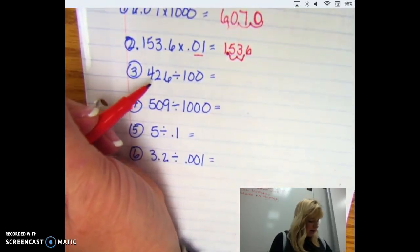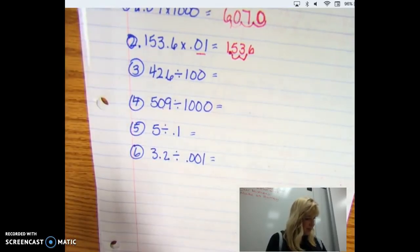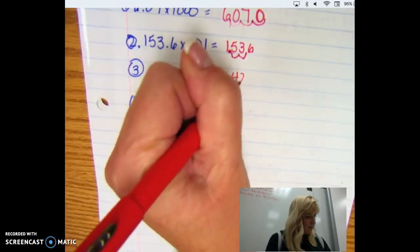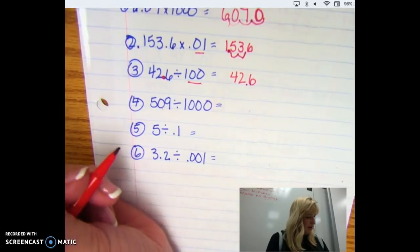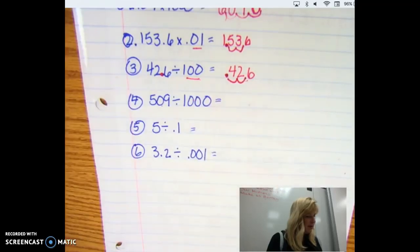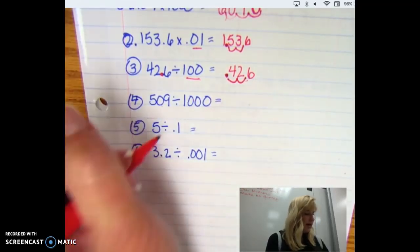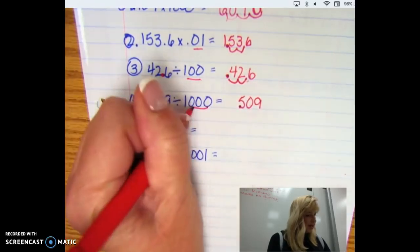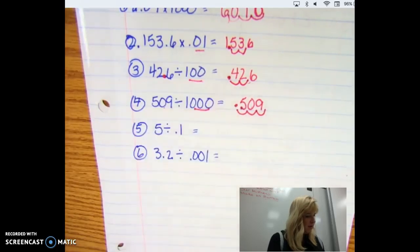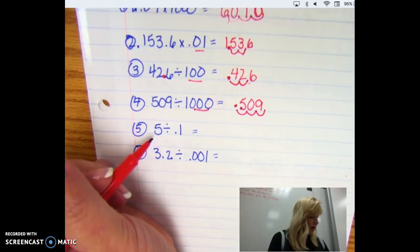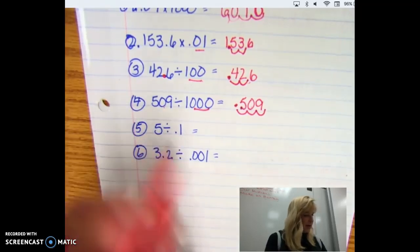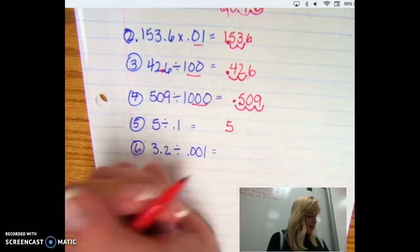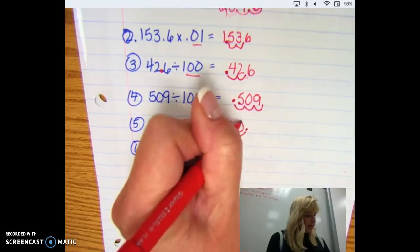Here we're going to divide by 100. This is 42.6, and I know I need to divide, so two places to the left. 509 divided by 1,000. There are three zeros here. One, two, three. Five divided by 0.1. How many dimes are in five dollars, I like to say. And I know that this one, I have to move it one to the right. So it starts right here. Placeholder zero should be 50.